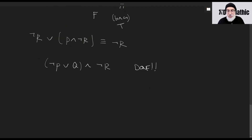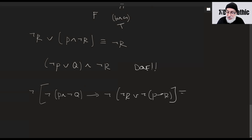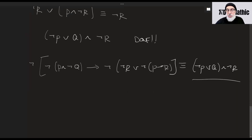Let's write out the full simplification because it's impressive to see. What we're saying is: not(not p and not q implies not(not r and not p implies r)) is exactly the same as (not p or q) and not r. We'd obviously prefer a truth table on that simplified right-hand side rather than the left-hand side.